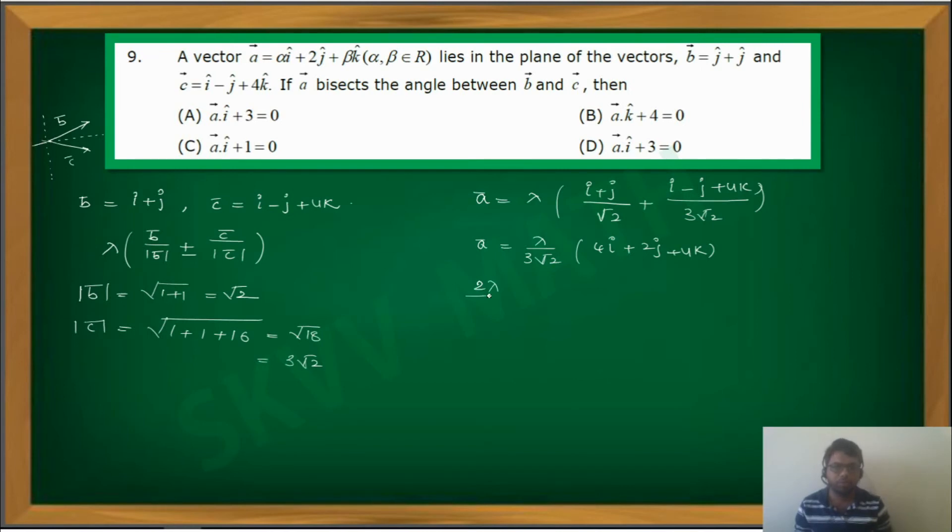But in the question you can observe that a bar, coefficient of j is 2. So I can write this as 2. So this implies lambda equals how much you get? 3 root 2. Now once you put this lambda equals 3 root 2 here, 3 root 2 by 3 root 2 will become 1. So therefore at the end you can get a bar equals 4i plus 2j plus 4k. Now you got a bar.